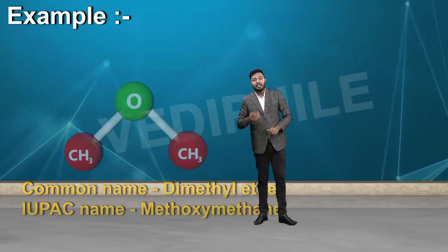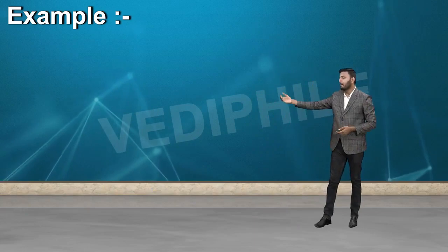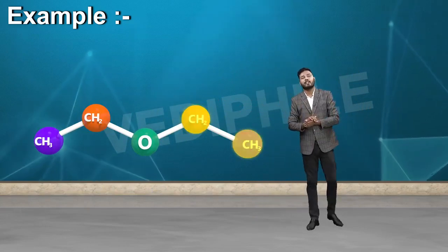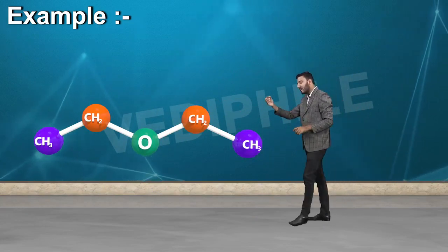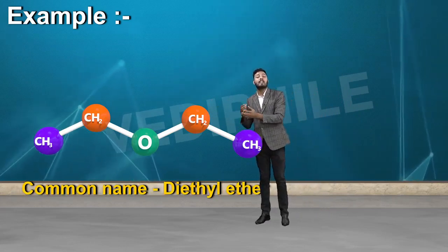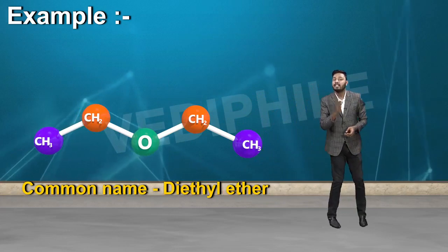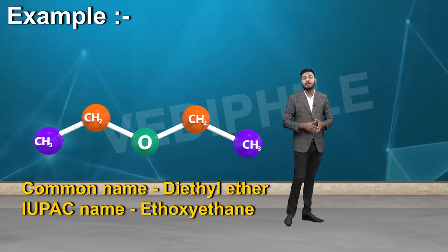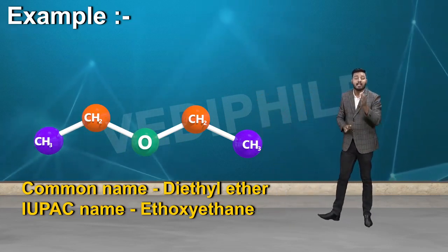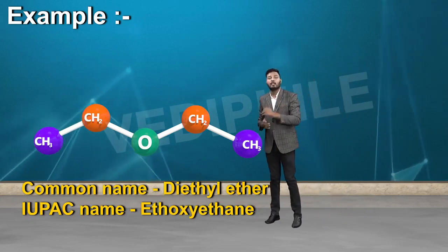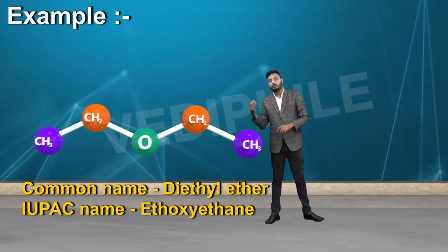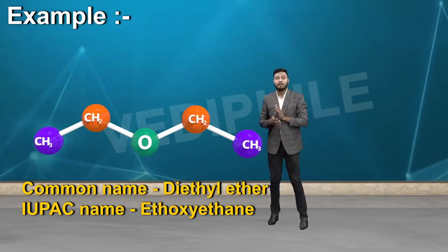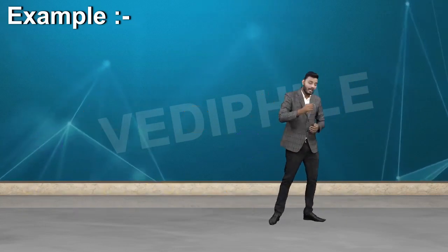For the second example, oxygen has 2 carbons on one side and 2 carbons on the other side. The common name is diethyl ether. The IUPAC name would be ethoxyethane.